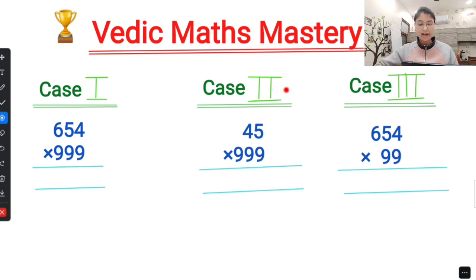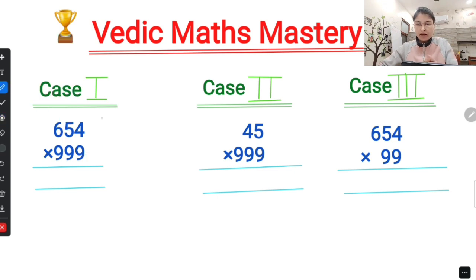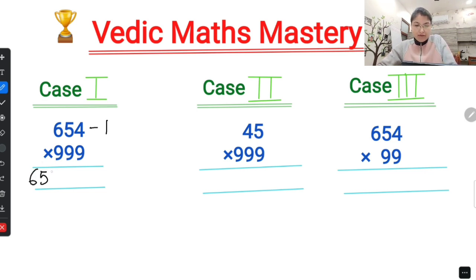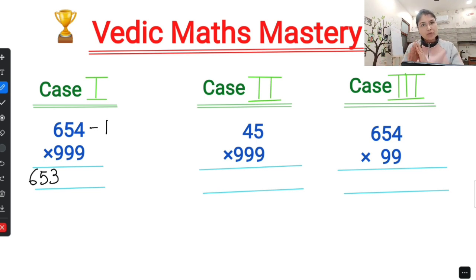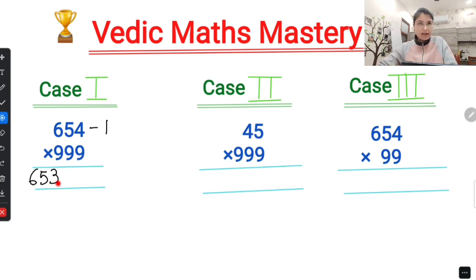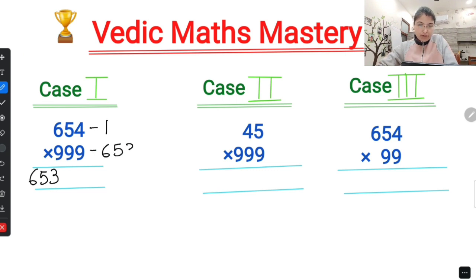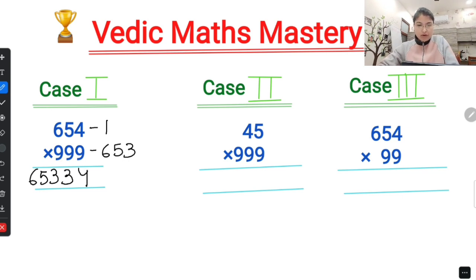See, the question is 654 × 999. What I do is subtract one from the original number: 654 minus 1 gives 653. So I write 653 on the left-hand side — that completes the left section. Then I subtract 653 from 999: 9 minus 6 is 3, 9 minus 5 is 4, 9 minus 3 is 6. So the answer is 653346, solved in just five seconds!